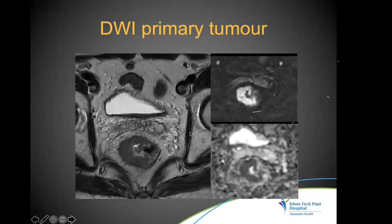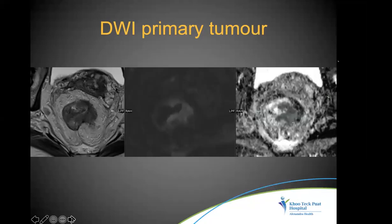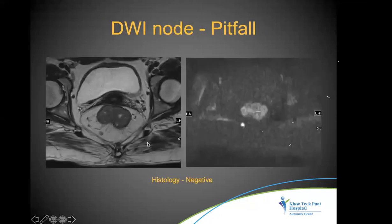Diffusion-weighted imaging can be useful to pick up the tumor, but mucinous tumors are not diffusion-restricting and will not be bright. Sometimes a node can be very bright on diffusion but very small with hardly any abnormal signal and turns out to be benign on pathology.